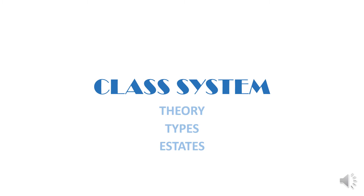If you go by the theory of class system, you can look at the famous sociologist and economist, the Russian theorist Karl Marx. He propounded a theory named after him as Marxist theory. According to this theory, he divided society into three social classes.